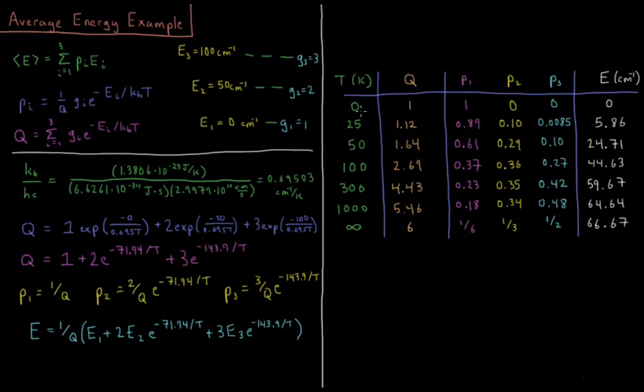We start off at a temperature of 0. The partition function is 1 because we get 1, 0, 0. The probability is going to be 1 over 1, so we get 1, 0, and 0. So we get 1 times 0 plus 2 times 0 plus 3 times 0, so 0 there. So the total energy is 0. It's just the energy of the ground state.